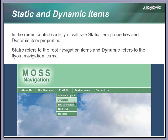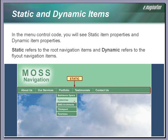When you're working with the .NET menu, you'll see references to static item properties and dynamic item properties. Static refers to the root navigation items, and dynamic refers to the flyout navigation items, or sublinks. In this example, these are the static menu items, and these are the dynamic menu items.